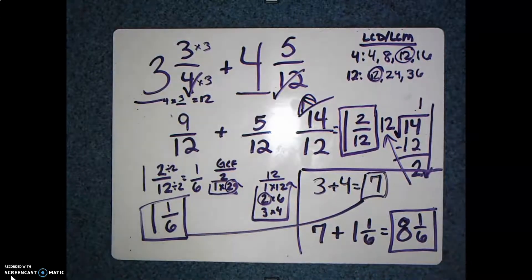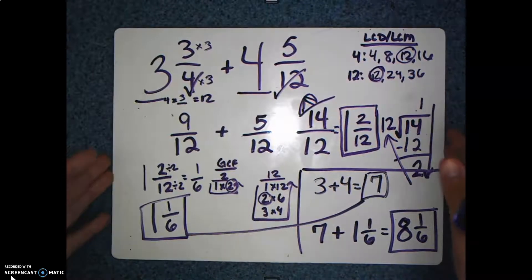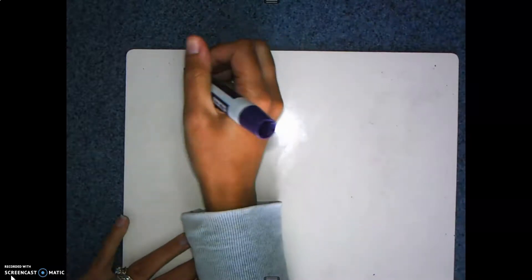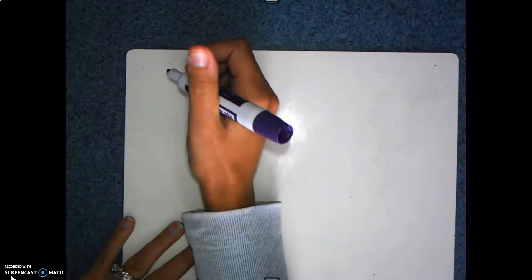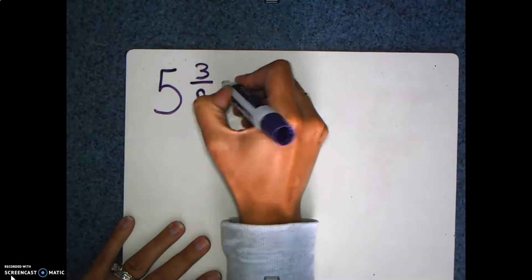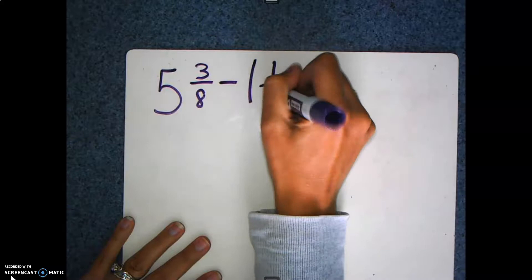So that is how you add mixed numbers together. This one had a lot of steps in it. The next one I'm going to show you is how to subtract mixed numbers. So here, let's look at this one.